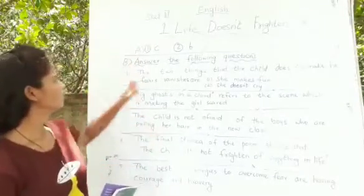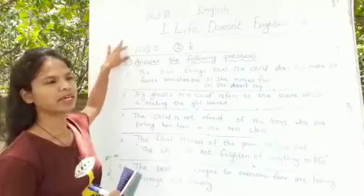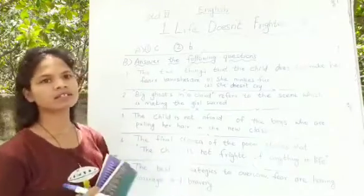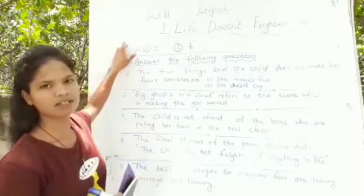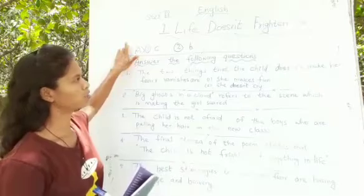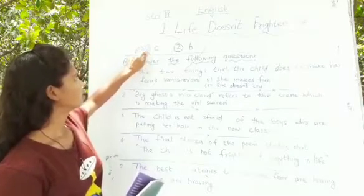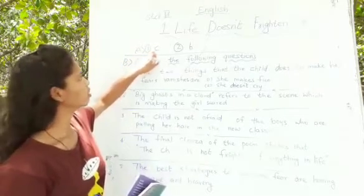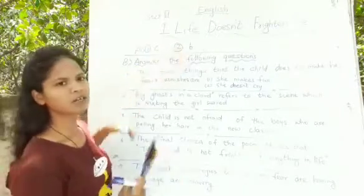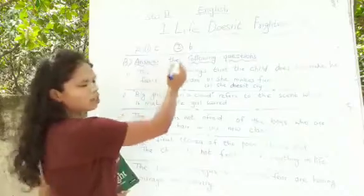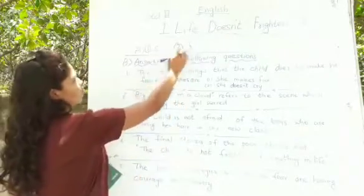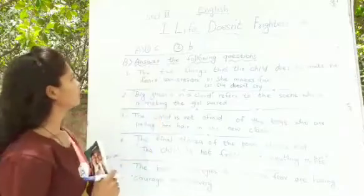We will start with Roman number A. It is given, tick the correct answer. Here I have given only the answer. You can refer to your book and mark it in your book itself. For your first, answer is C. Put a tick mark for option C. And second, B. You have only to tick the correct option, so here the answer I have written already.